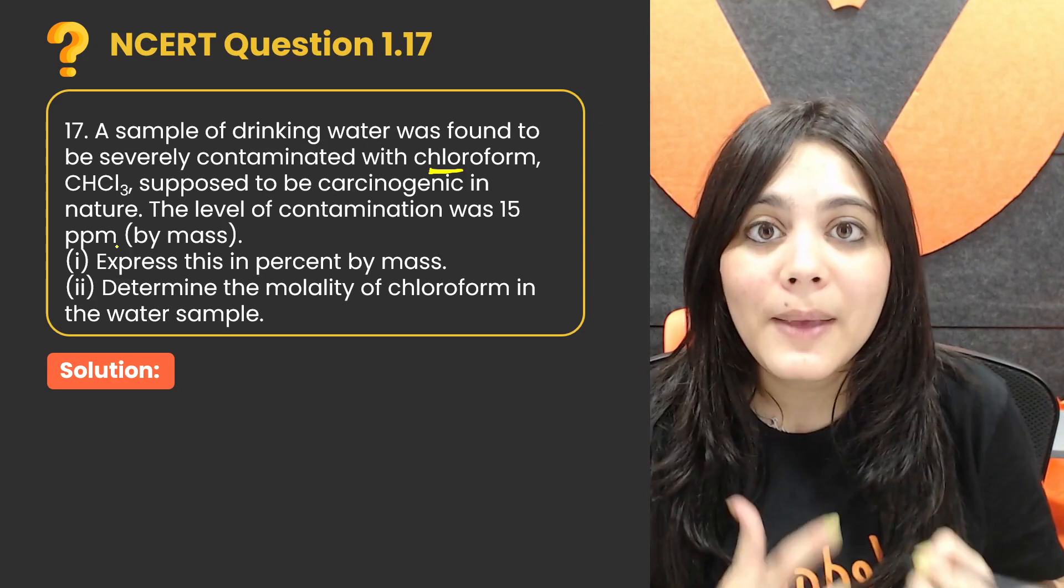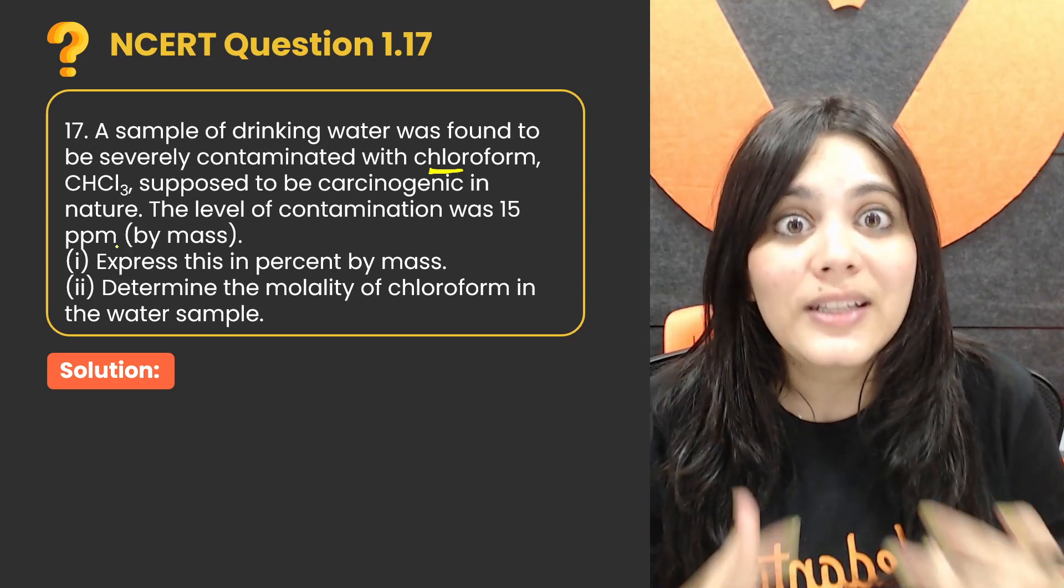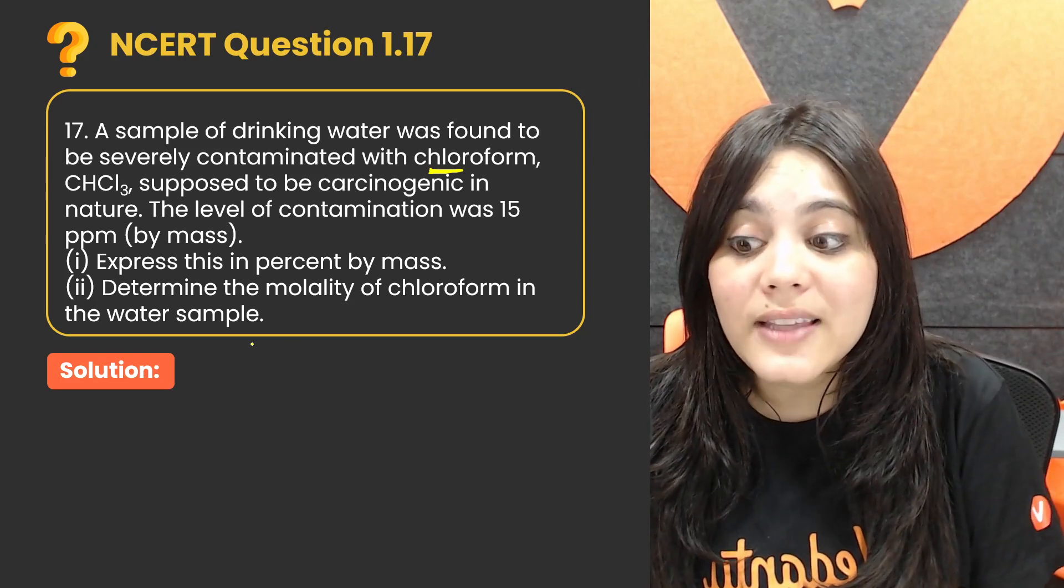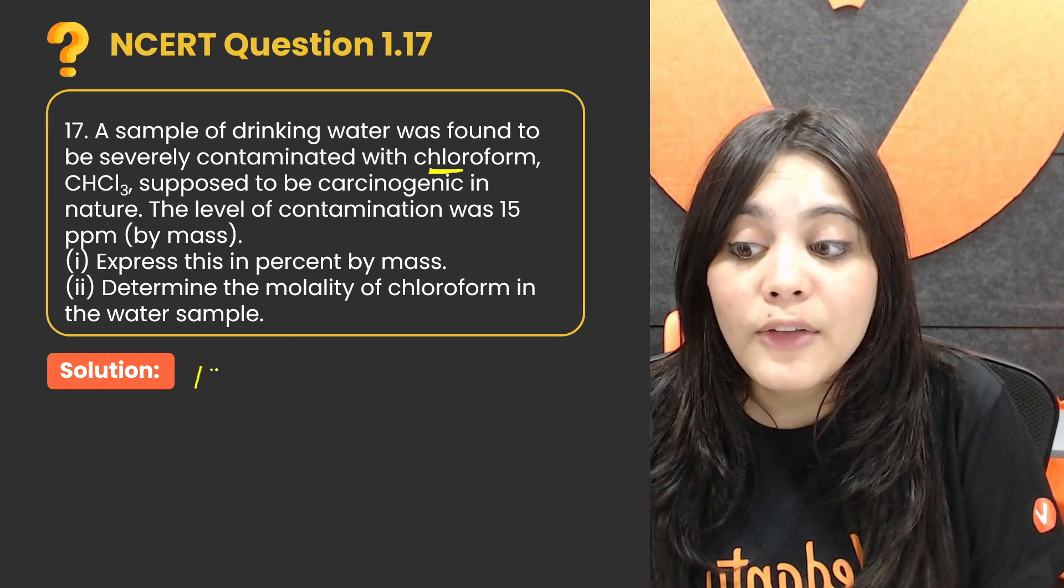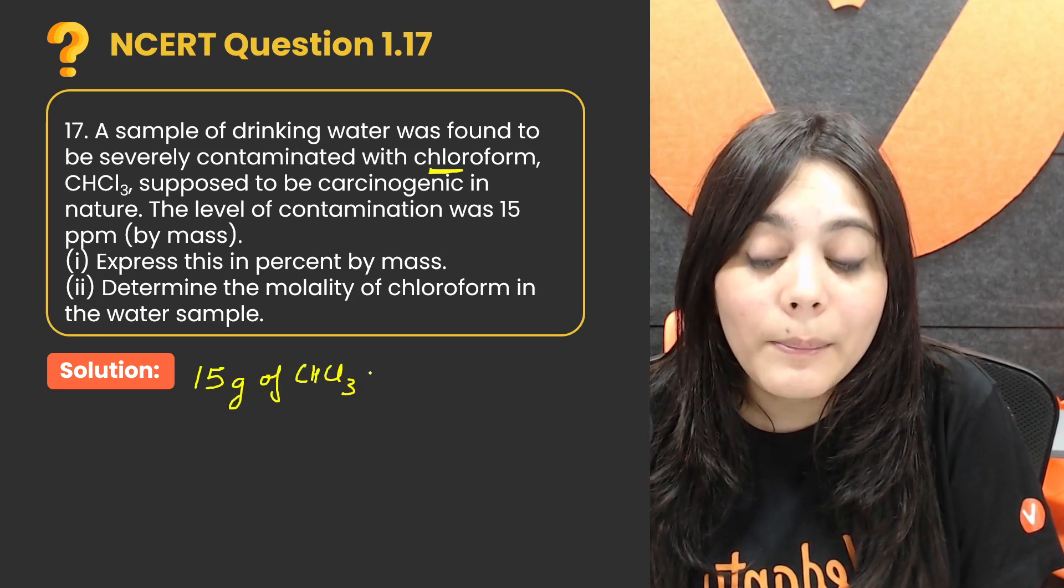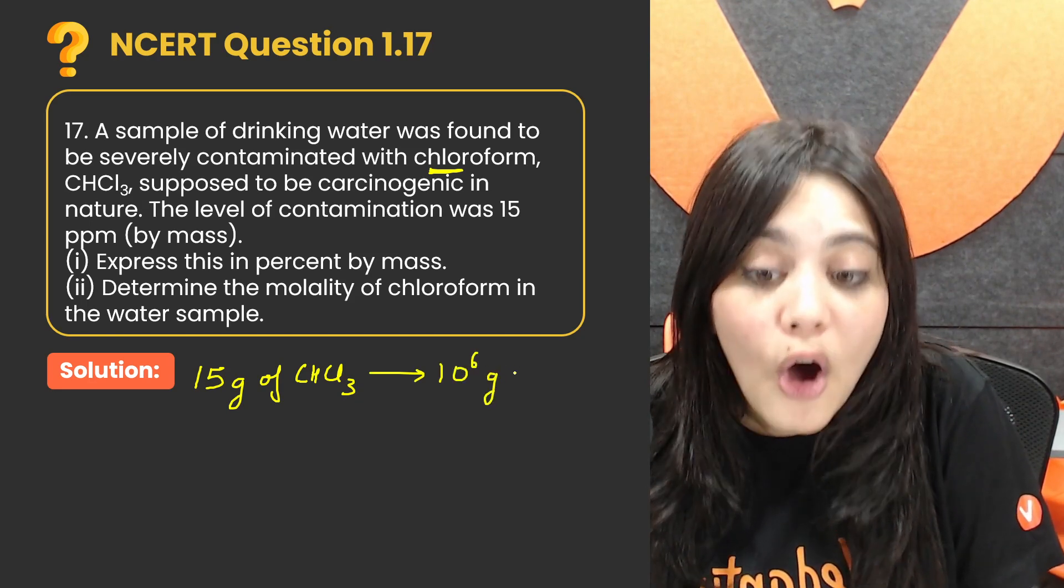What does PPM mean? PPM is parts per million. How many zeros are in a million? 10 to the power of 6 zeros. So according to this, it means that if you have 15 grams of chloroform CHCl3, which is present in 10 to the power of 6 grams of water.